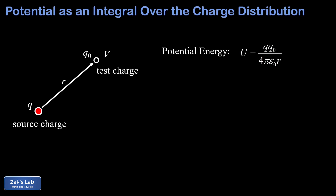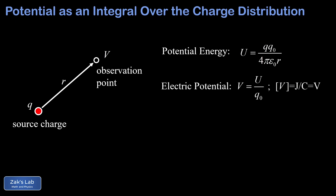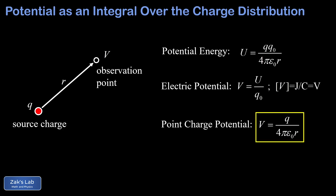Recall that the electric potential is defined as the potential energy per unit charge: V = U/q-naught, measured in joules per coulomb or volts. Note that q-naught disappeared from the diagram and now we're talking about the potential at that observation point. So the electric potential near this source charge is just q over 4πε₀r.